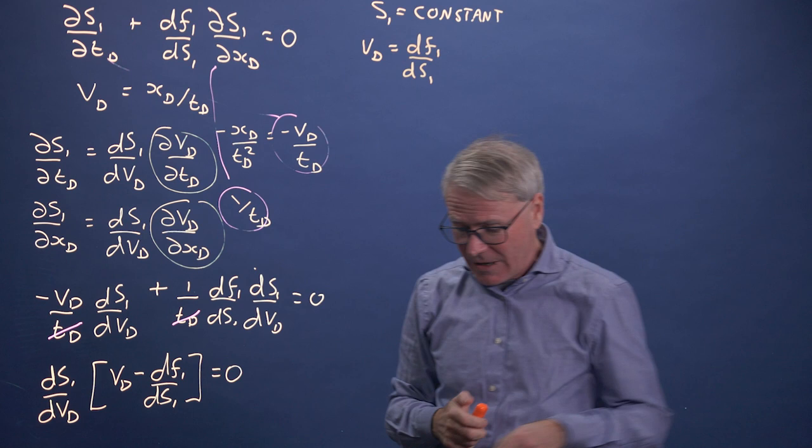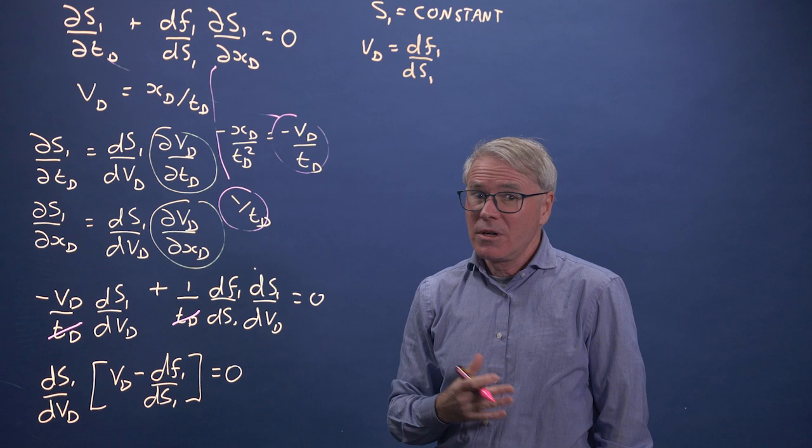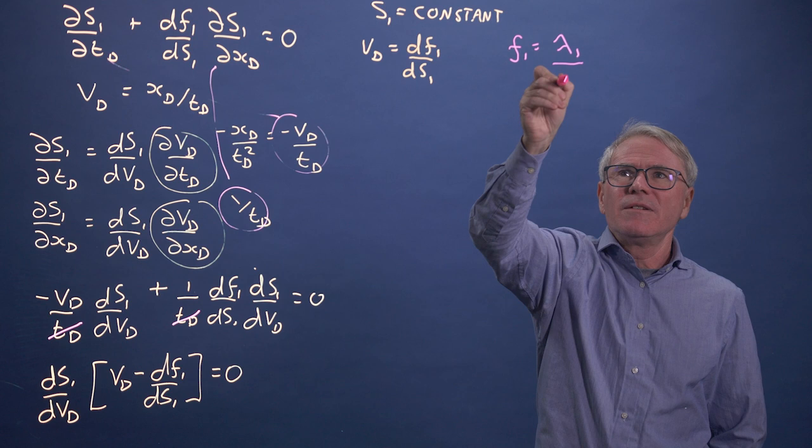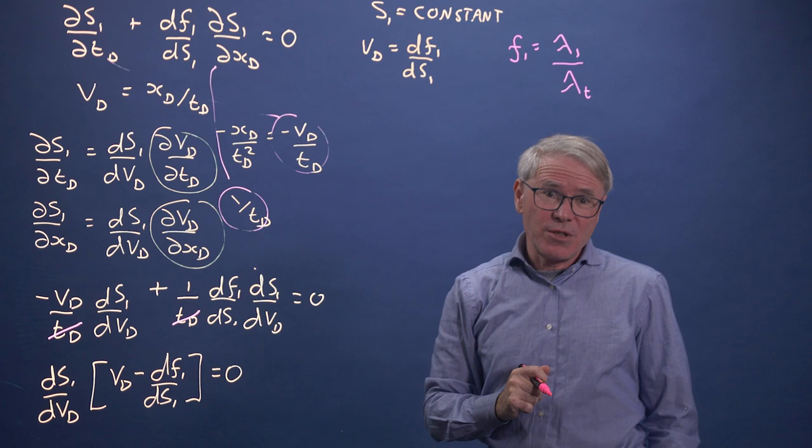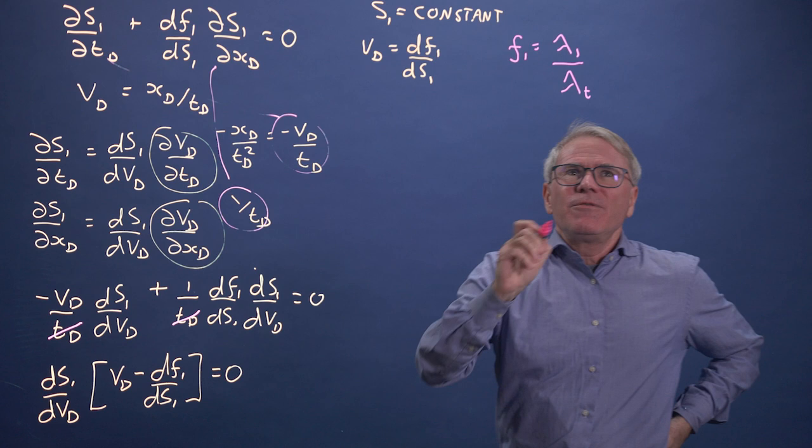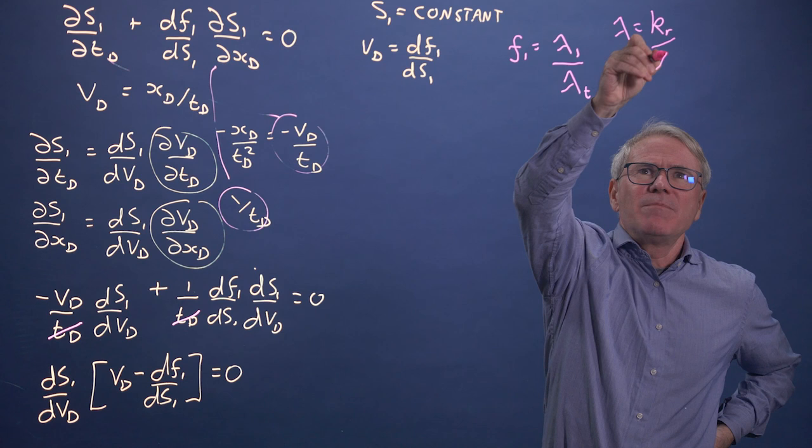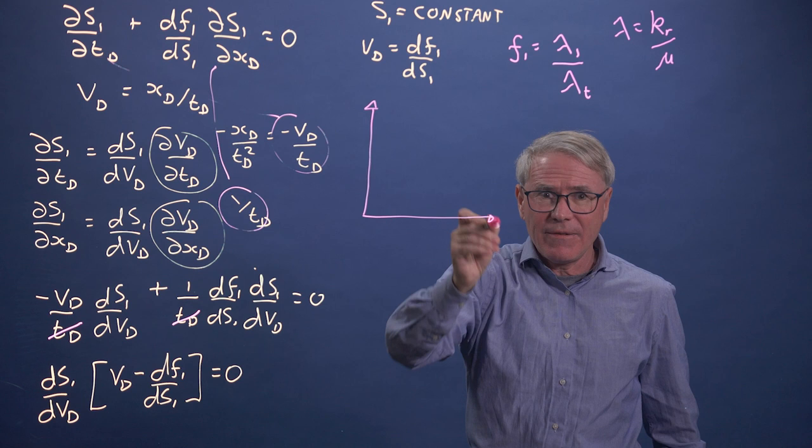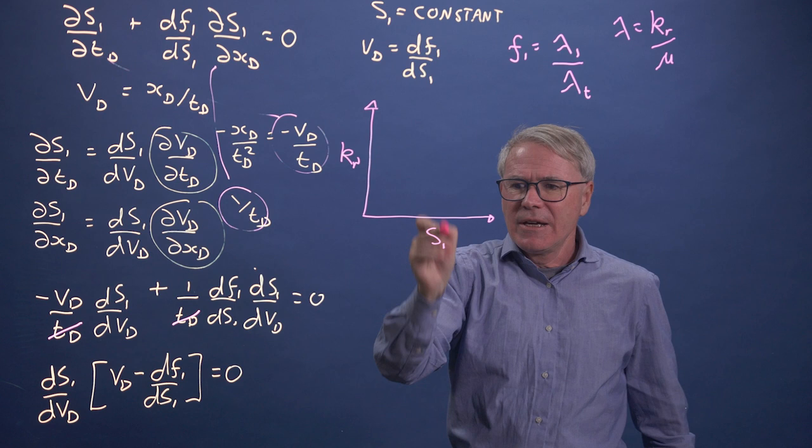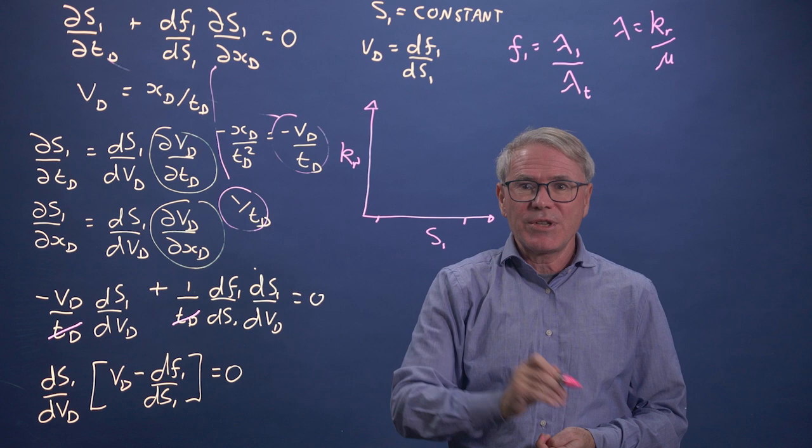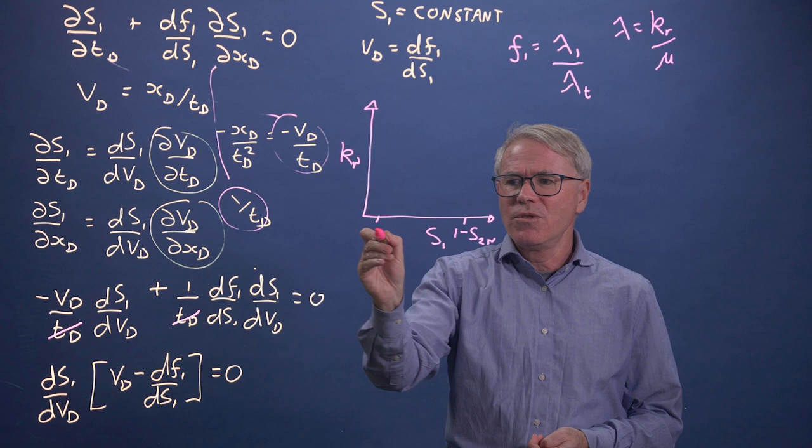Now, at this point, we do actually have to think about what these functions look like. I'm going to, just as an example, look at one case where I'm going to ignore gravity. I'm going to assume that the fractional flow is just the mobility of one phase divided by the sum of the mobilities of the two phases. I'm also going to assume that the viscosities are similar. A mobility is a relative permeability divided by viscosity. So let's draw out some typical relative permeability functions. This is relative permeability, this is the saturation of phase one, say that's water. Imagine we've got water that's displacing carbon dioxide in a reservoir. We have an initial saturation and a residual saturation. This is one minus S2 residual, this is the initial saturation of that phase.